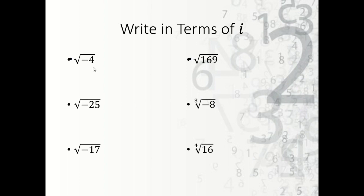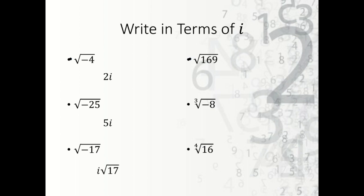If I were to ask you what are the square roots of negative 4, we know that any negative gives us i. So this is really 4i, and we can take the square root of that to get 2i. The square root of negative 25 is 5i. The square root of negative 17, since there is no perfect square, we pull the i out front: i times the square root of 17. The square root of 169 is 13, but it should be positive or negative, so it's ±13.